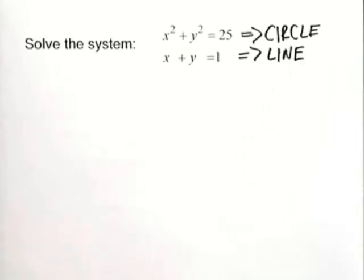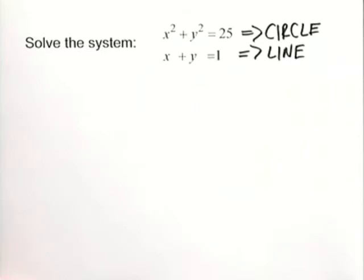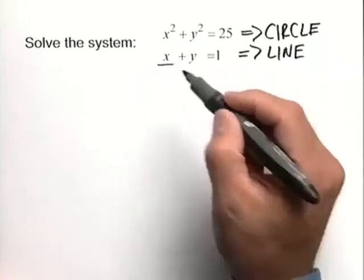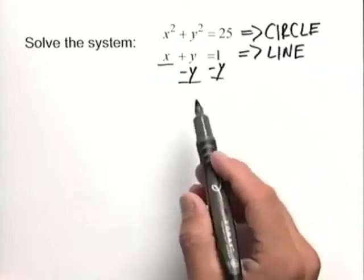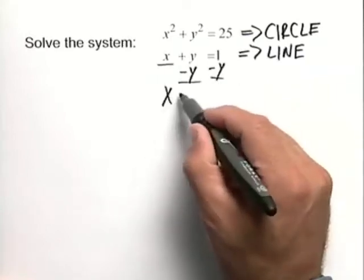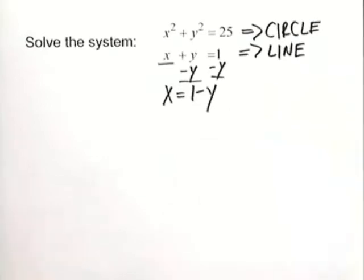So let's think about this. What possibilities could happen with a circle and a line? We'll find that out here. A good way to solve this is by substitution. Let's solve for x in the second equation, do that by subtracting y from both sides, and from this we get x is equal to 1 minus y.